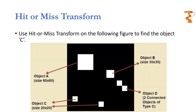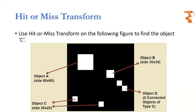I'm going to describe a very important transform. It is not an algorithm — it is a transform. It will transform the image into something else. It is called the hit or miss transform. By the name, it suggests that it is going to either hit something or miss something.